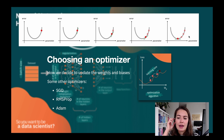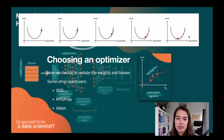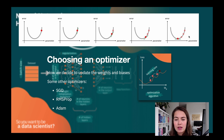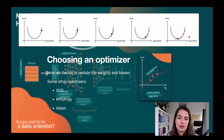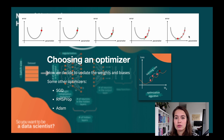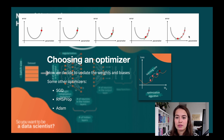The learning rate can take many values. It normally ranges from 0.0001 to 0.1, where 0.1 would be a very large learning rate. We'll talk about how to set the learning rate, and there are algorithms to dynamically change it to tackle some of the problems we have with neural networks.